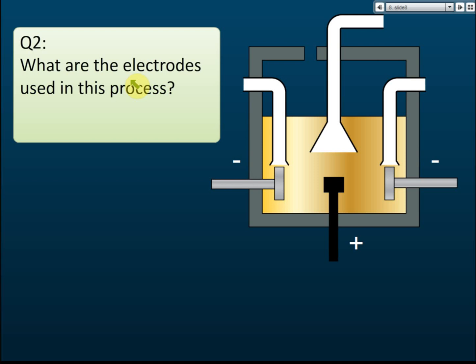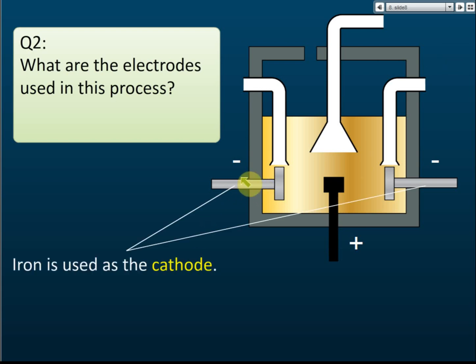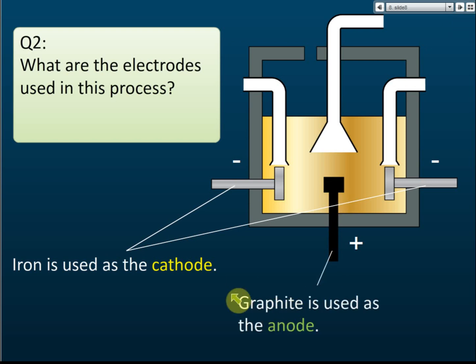The second question that may be asked is about the electrodes — specifically what materials are used as the electrodes. The cathode, which is the negative electrode, is made of iron. Iron is used as the cathode — you must remember this. For the anode, graphite is used. Graphite is carbon. So graphite is used as the anode and iron is used as the cathode.